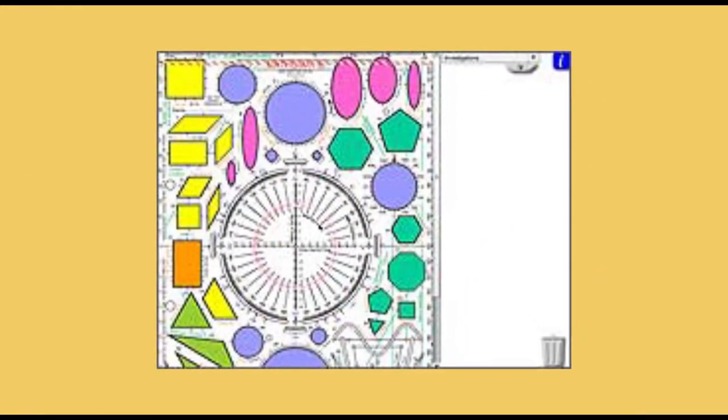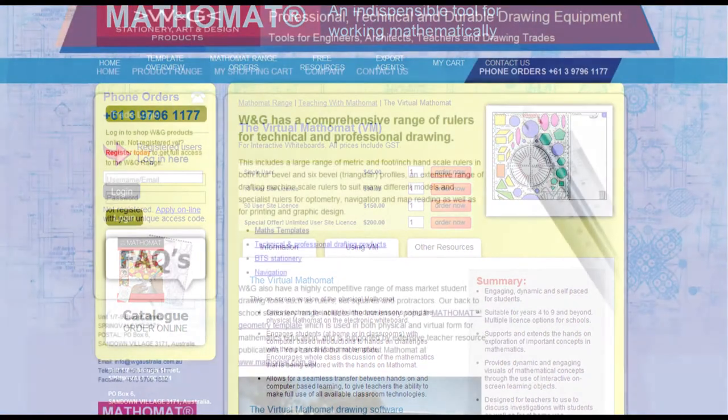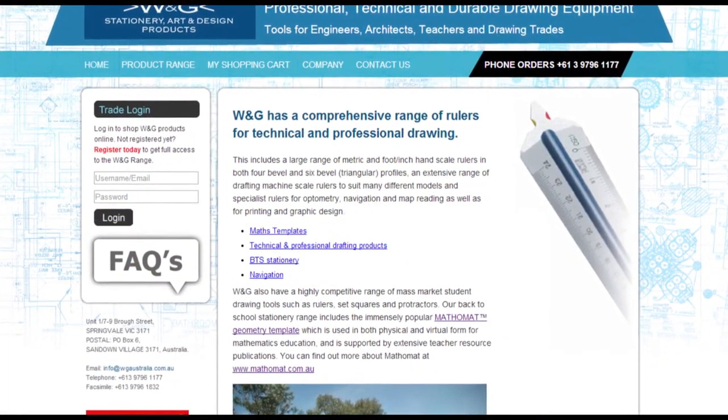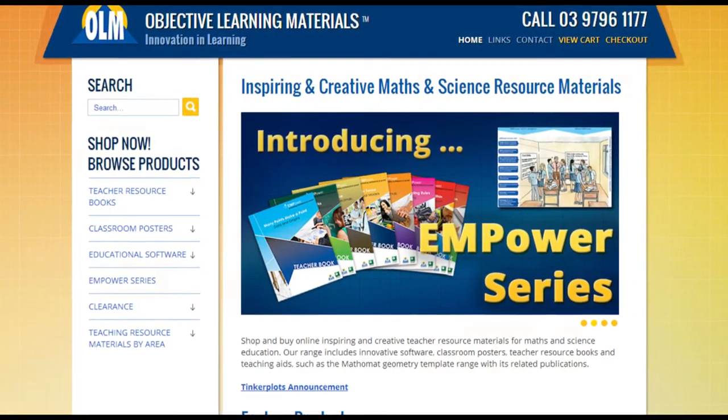Virtual MathoMatte. A software version of the physical MathoMatte is downloadable from our website. MathoMatte is the property of W&G Education and is distributed in Australia via Objective Learning Materials and in Africa via ERA Distributors. www.mathoMatte.com.au www.education-era.com